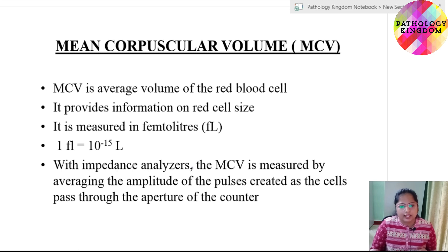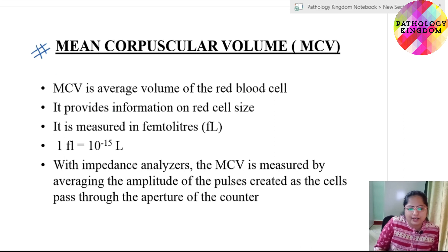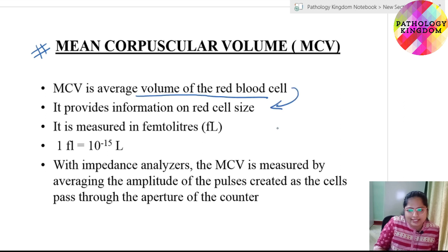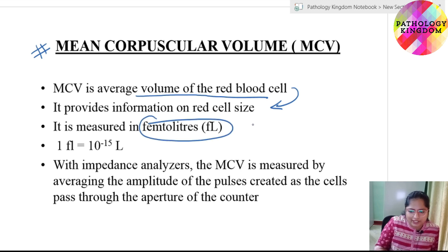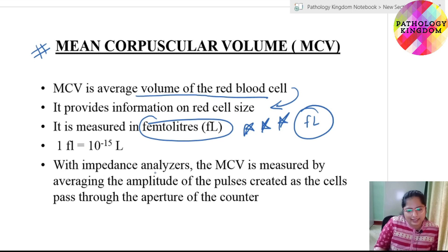MCV stands for mean corpuscular volume. It is the average volume of a red blood cell and provides information on red cell size. Its unit is femtoliters (fL), where one femtoliter equals 10⁻¹⁵ liters. With automated impedance analyzers, the MCV is measured by averaging the amplitude of the pulses created as cells pass through the aperture of the counter.